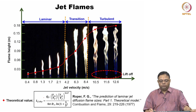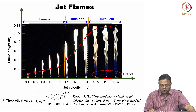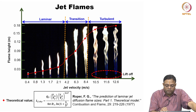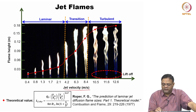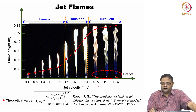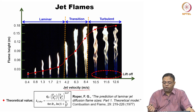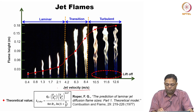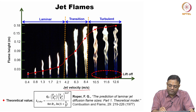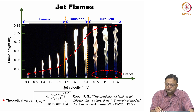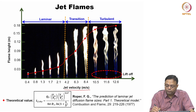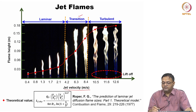Now let us continue with experiments. For the same burner port, multiplying jet velocity by the port area gives the volumetric flow rate. In the laminar regime with methane, the flame height increases as flow rate increases. At higher flow rates, oscillations appear and the flame enters the transition regime, where it goes up and down vigorously.